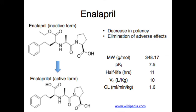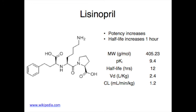Enalaprilat has a longer half-life than captopril due to an increase in volume of distribution, from 0.75 liters per kilogram for captopril to 10 liters per kilogram for enalaprilat. The lysine analog of enalapril, lisinopril, resulted in an increase in the half-life of the drug by an hour from that of enalapril, and also saw a large increase in potency. An important property of lisinopril that differs from enalapril is that it does not require a pro-drug, meaning it does not have to be metabolized by the body to bind to the active site of ACE, which is beneficial for patients with decreased hepatic function.